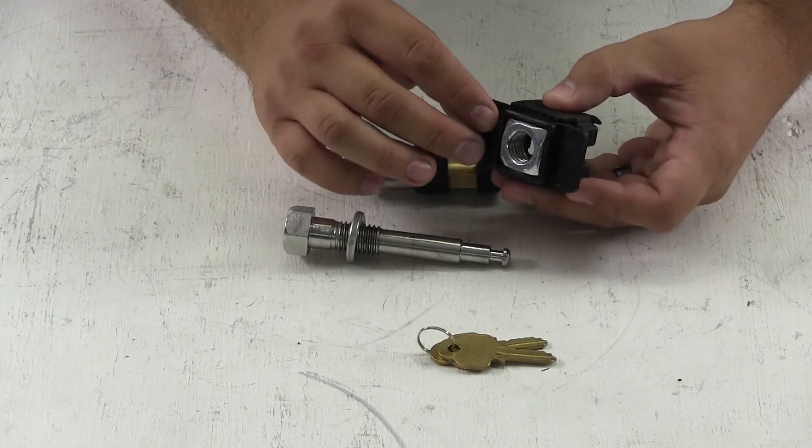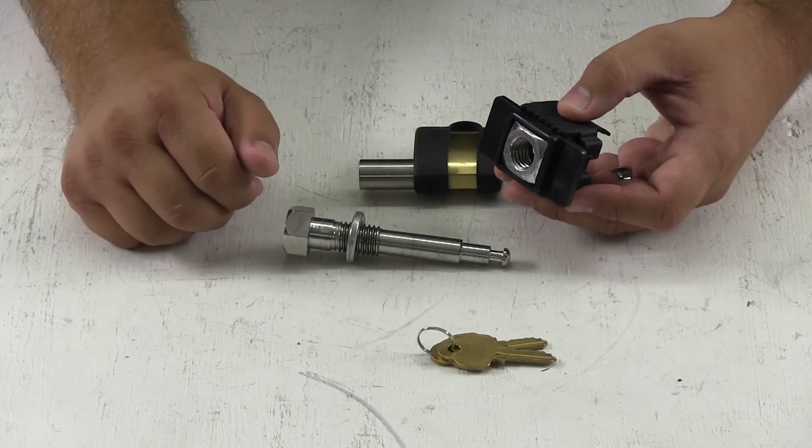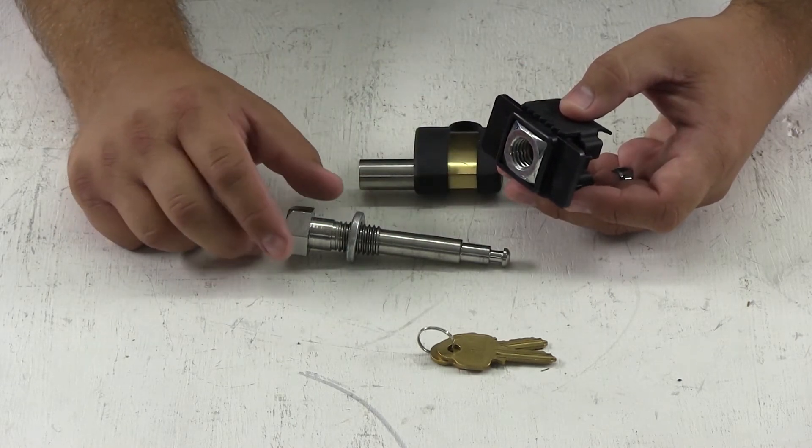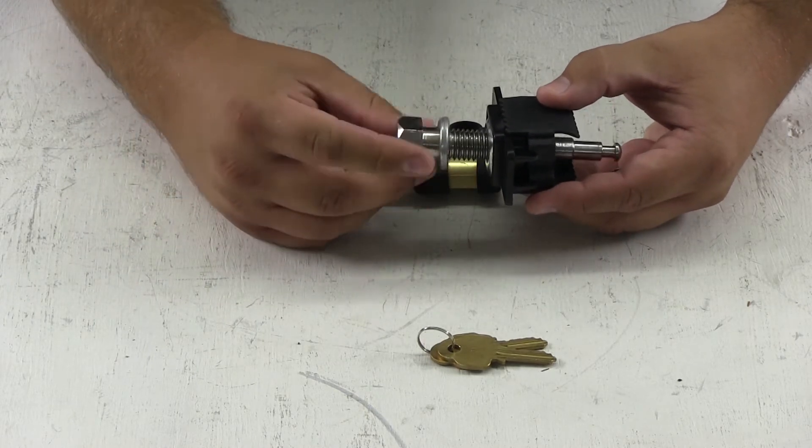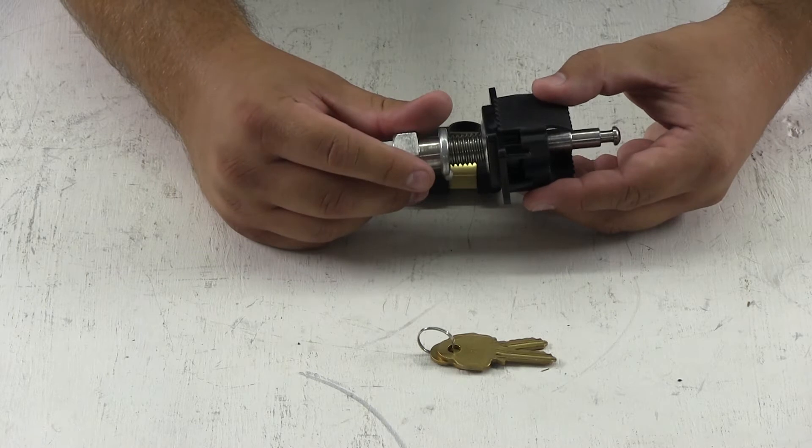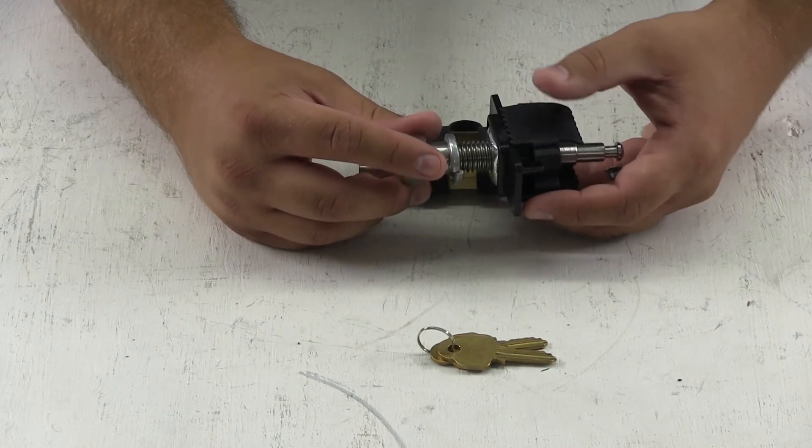It utilizes a nut that fits inside the shank of your ball mount, cargo carrier, or bike carrier. The threaded pin is then inserted inside and threaded into the nut. It'll pull your ball mount to the side of your hitch, removing any of the rattle.